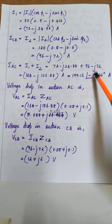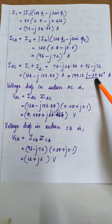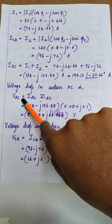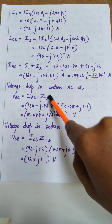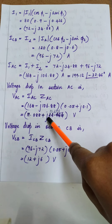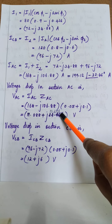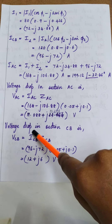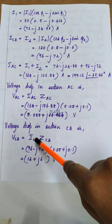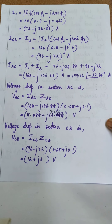The sending end current IAC is expressed in both rectangular and polar form. The drop in section AC: VAC = IAC × ZAC = 19.088 + j11.456 volt. Similarly, the drop in section CB: VCB = ICB × ZCB = 12 + j6 volt.